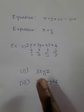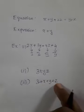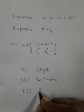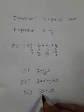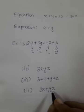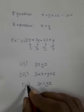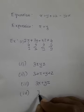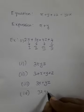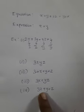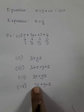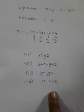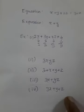So 3xyz is a monomial and 3 plus x plus y plus z is a polynomial. Now for a binomial: 3x plus yz has term 1 and term 2 — when you have two terms, that is called a binomial. Next is a trinomial: 3x plus y plus z has term 1, term 2, and term 3, so this is a trinomial.